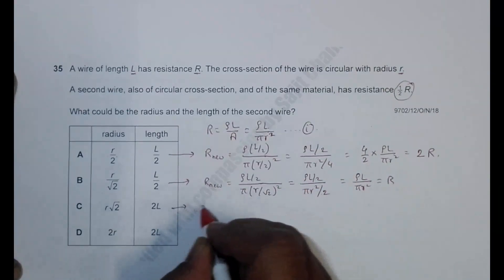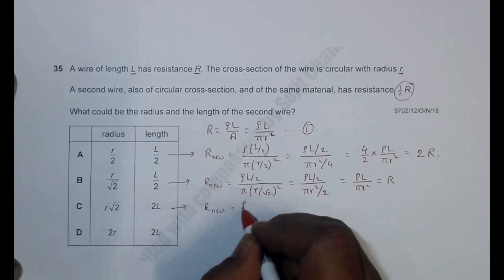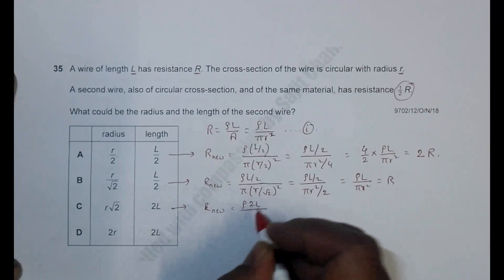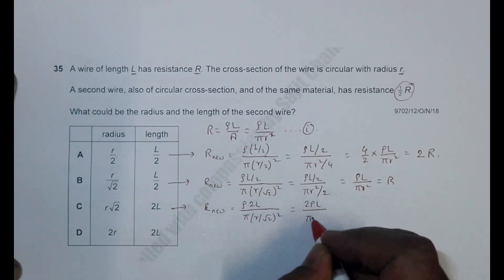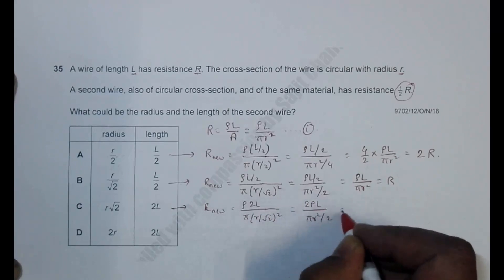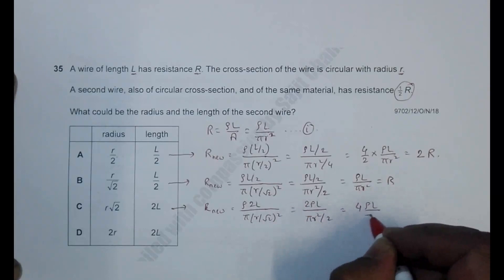In number three, I should have R_new equals ρ times 2L divided by π(r/√2)². So this will be 2ρL divided by πr²/2. This 2 will come here, so it becomes 4ρL/πr², which is equal to 4R. Not correct.